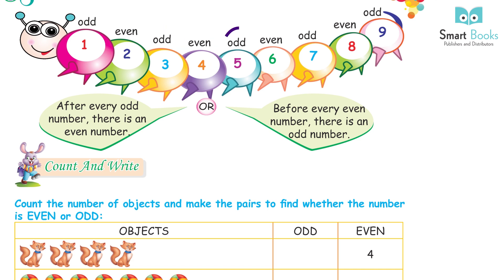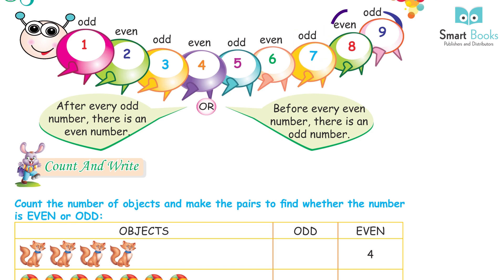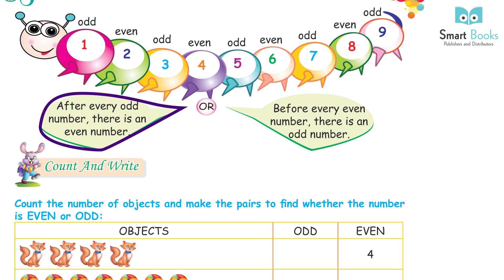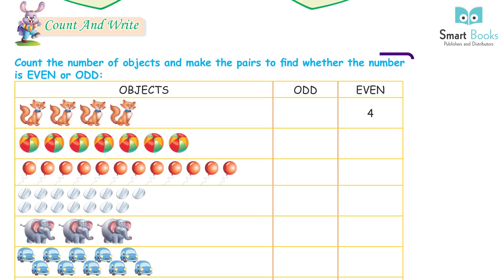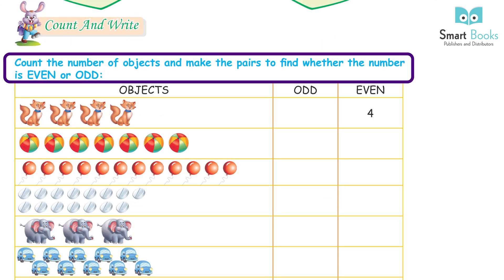One is odd, two is even, three is odd, four is even, five is odd, six is even, seven is odd, eight is even, nine is odd. After every odd number there is an even number, or before every even number there is an odd number.